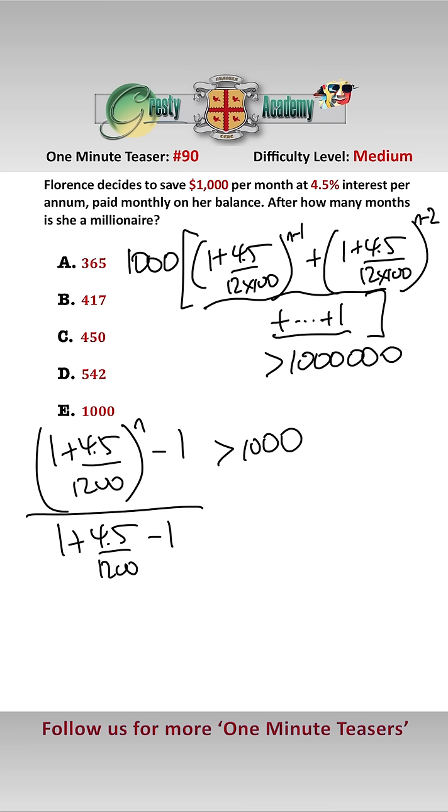Simplifying that, we get that (1 + 4.5 over 1200) to the power of n must be greater than 4,500 over 1200 plus 1.